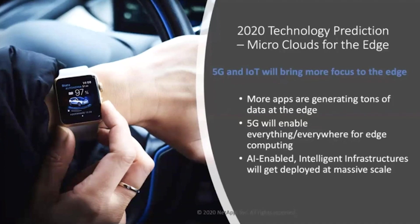With 5G, it will enable everything everywhere, making technologies such as AR, VR, and smart connected devices possible. AI-enabled intelligent infrastructures will get deployed at massive scale and disrupt the high-performance computing industry. Edge build-out is already happening — if you're not already planning for it, you should. Trends like IoT, self-driving cars, and biometrics are accelerating its pace. IDC has predicted that by 2023, 50% of all enterprise IT infrastructure will be deployed at the edge, so start planning for what your IT infrastructure must sustain to handle edge environments.